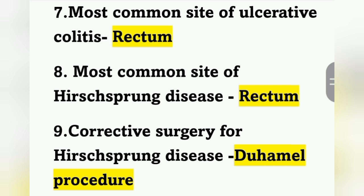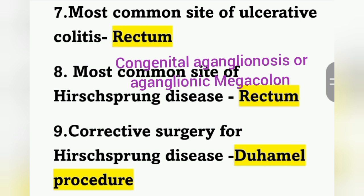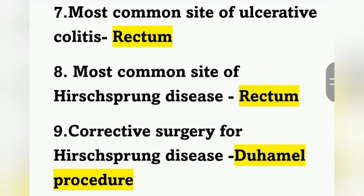The next question: most common site of Hirschsprung's disease is the rectum. Most common site of ulcerative colitis is also the rectum. Hirschsprung's disease is a congenital anomaly, also known as congenital aganglionosis or aganglionic megacolon.